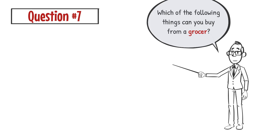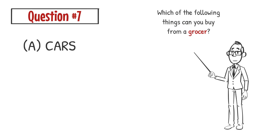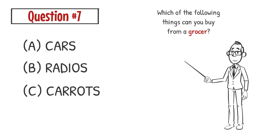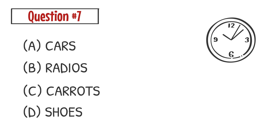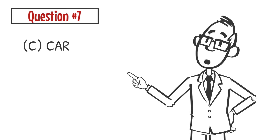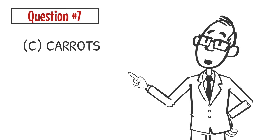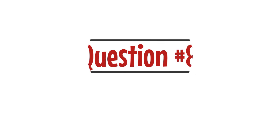Question number 7: Which of the following things can you buy from a grocer? A. Cars B. Radios C. Carrots D. Shoes. The correct answer is C. You can buy carrots from a grocer.